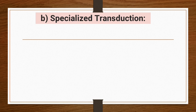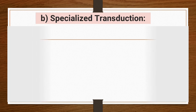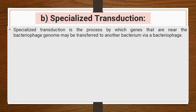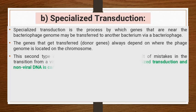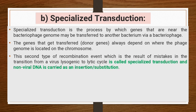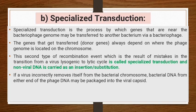The second type is specialized transduction. Specialized transduction is the process by which genes near the bacteriophage genome insertion site may be transferred to another bacterium via bacteriophage. The genes that get transferred always depend on where the phage genome is located on the chromosome. This second type of recombination event results from a mistake in the transition from the lysogenic to the lytic cycle.